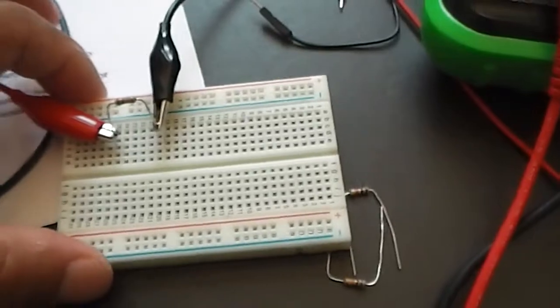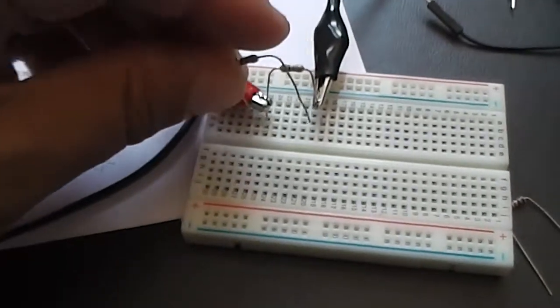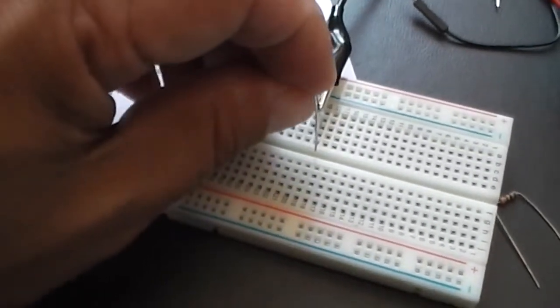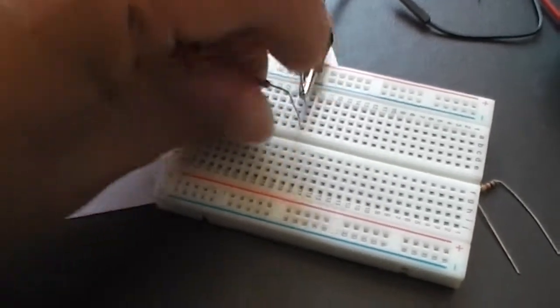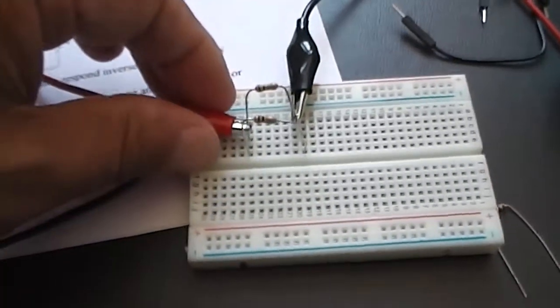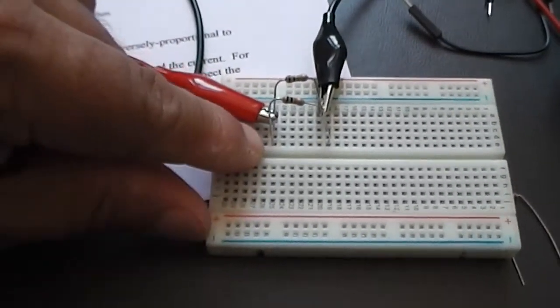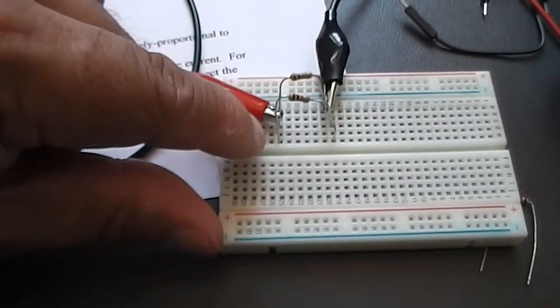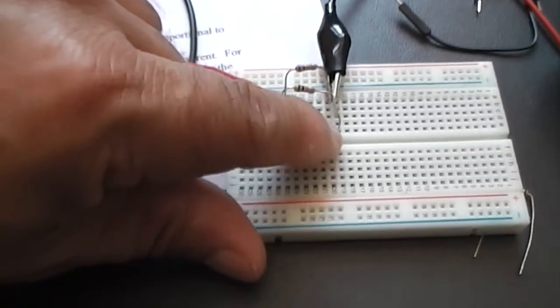So here on the breadboard, I'm going to have another 10k ohm resistor, and I'm going to put it in parallel with the one that's already there. So it's going to look something like this. All right, so there's the assembly. You can see that these two ends of the resistor are in the same set of five holes, and these two other ends are in the same set of five holes.